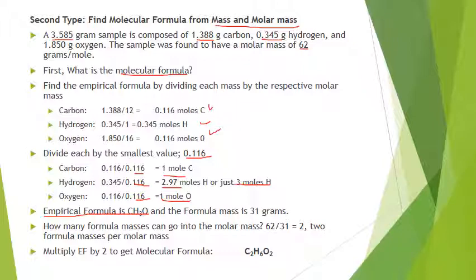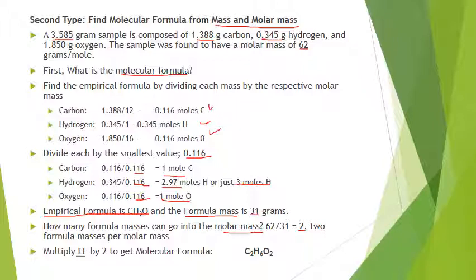Find how many formula masses fit into the molar mass: 62 divided by 31 = 2. There are two formula masses per molar mass, so there are two empirical formulas per molecular formula. Multiply every subscript by 2 to get the molecular formula C2H6O2.